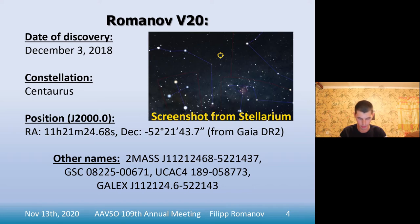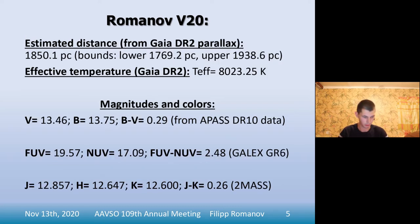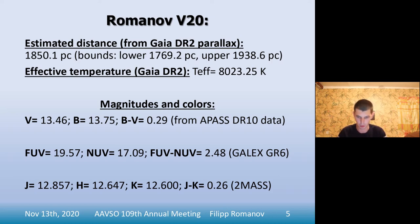The star is located in the Southern celestial hemisphere. The fifth slide shows the data of the star from the Vizier catalogs and from the AAVSO Photometric All-Sky Survey, APASS. As you can see, the star outside of eclipses is bright enough to be photographed with amateur telescopes. The estimated distance to the star is 6,034 light years.